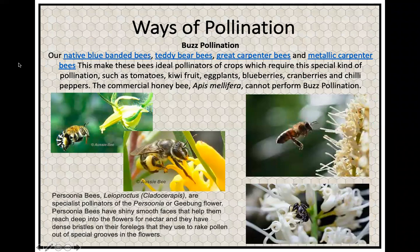The different ways bees pollinate — there's buzz pollination. Our native blue-banded bees, teddy bear bees, carpenter bees, and metallic carpenter bees are the ideal pollinators of crops requiring this special kind of pollination, such as tomatoes, kiwi fruit, eggplants, blueberries, cranberries, and chilli peppers. These bees are being encouraged for this kind of pollination. The commercial honeybee cannot perform buzz pollination.